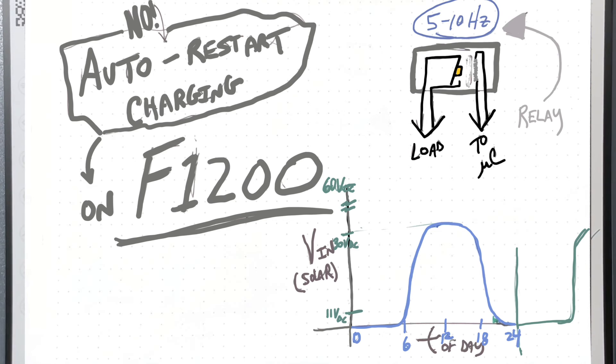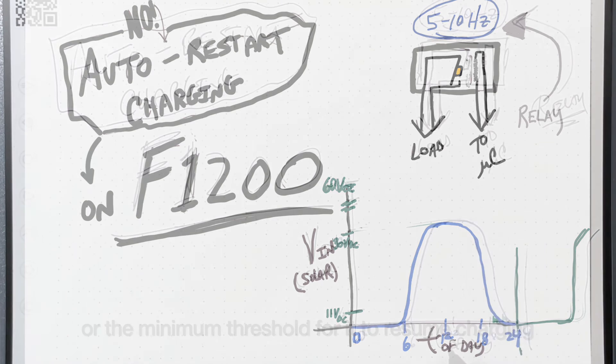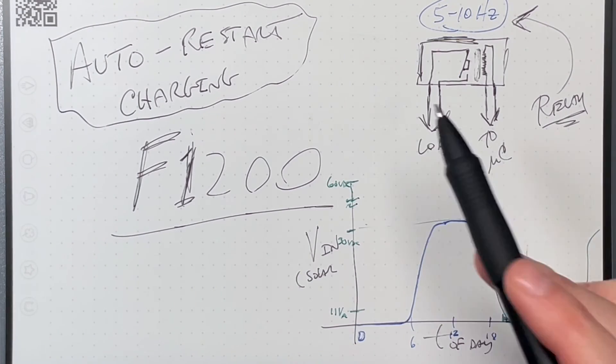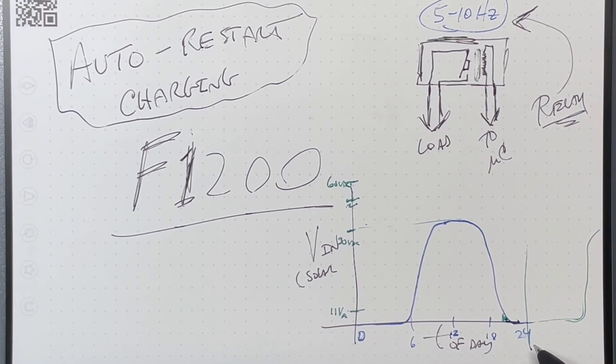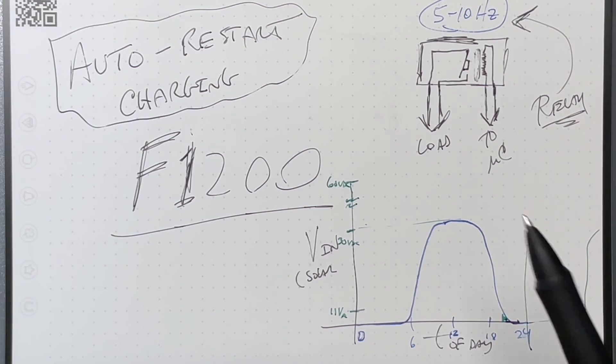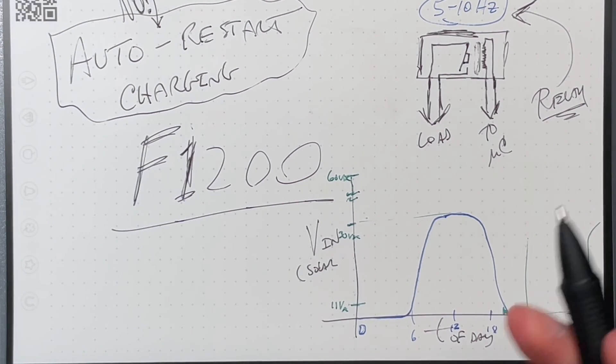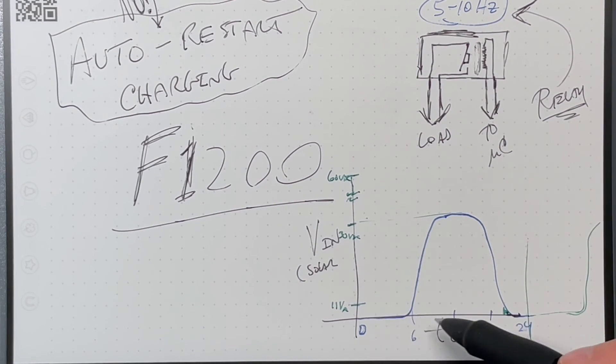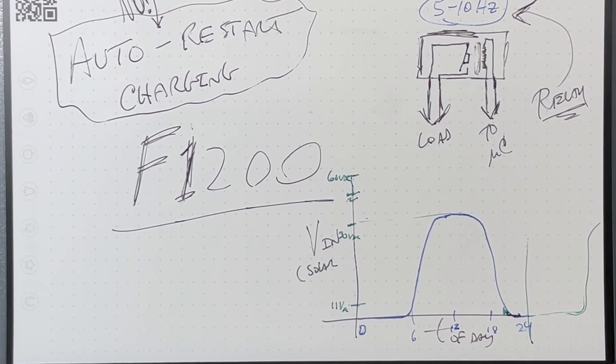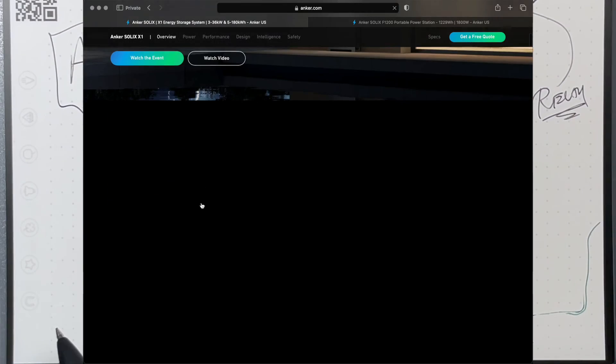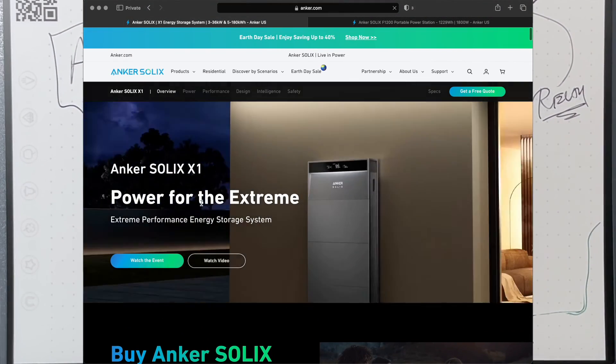It will resume charging when voltage on the panels gets to a point that it actually can find a point in the IV curve to get its maximum power point tracking above a watt or two watts or something like that. What's disappointing is that when it gets down to night, it shuts off that relay when the voltage drops below that threshold, and then it doesn't turn it back on again. I can see why they would do this - you minimize quiescent drain, which is nice, but you could check the input voltage every five minutes or something, so that the next day it could just automatically restart.